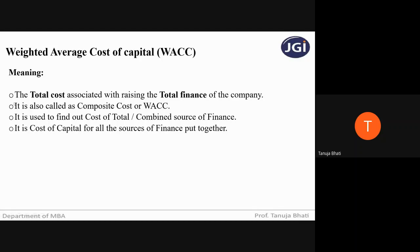WACC is used to find out the cost of total or combined source of finance. When each individual source has been combined, you get the total finance, and finding out the cost for the total finance is your total cost, which is achieved through WACC — weighted average cost of capital.